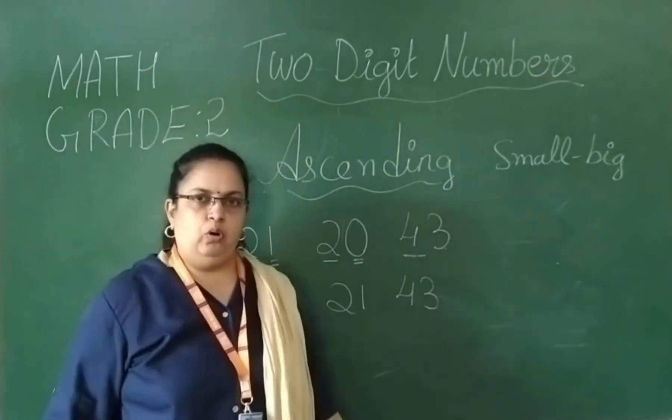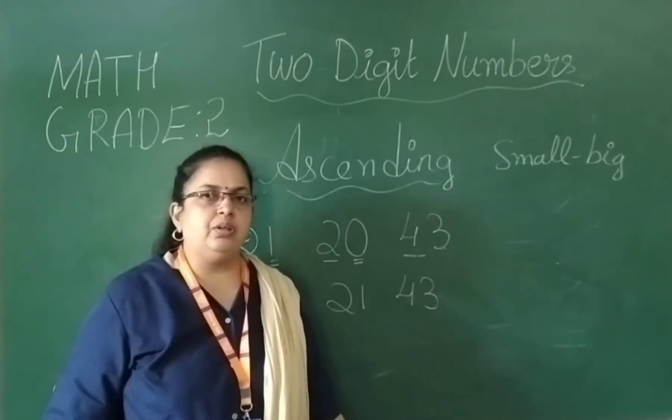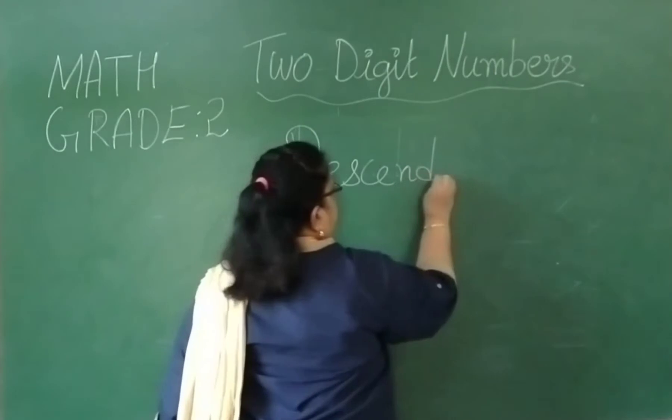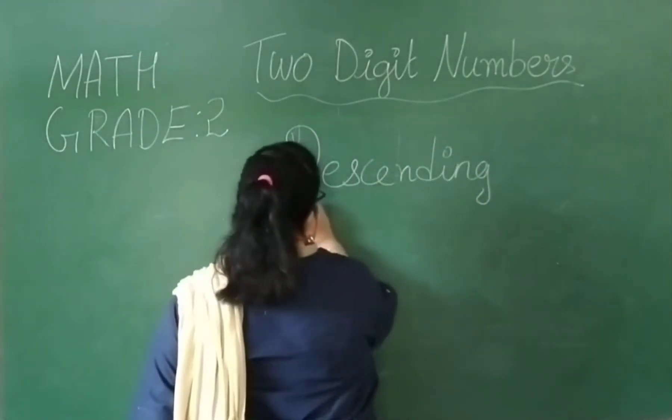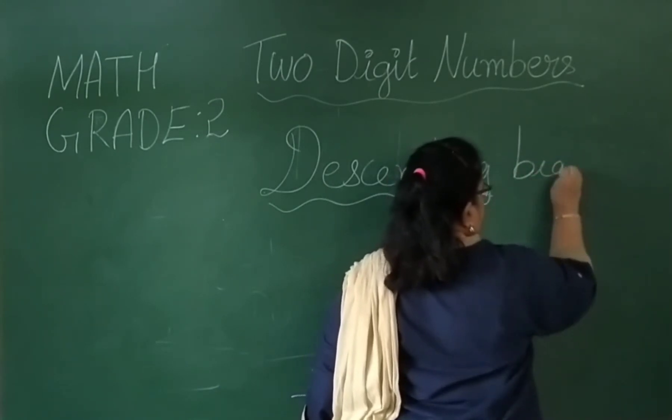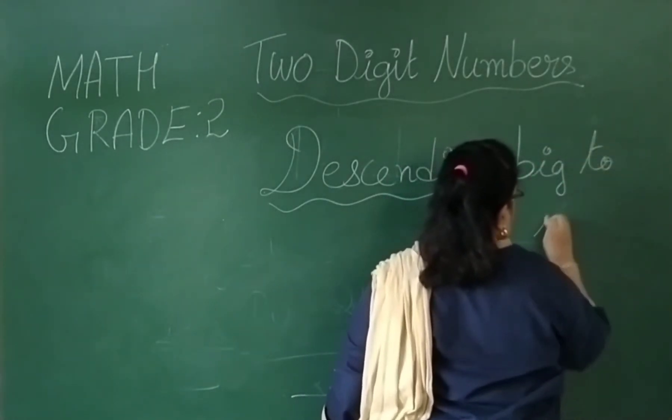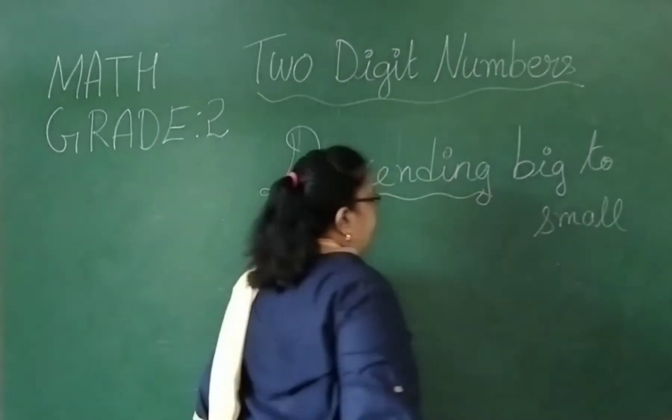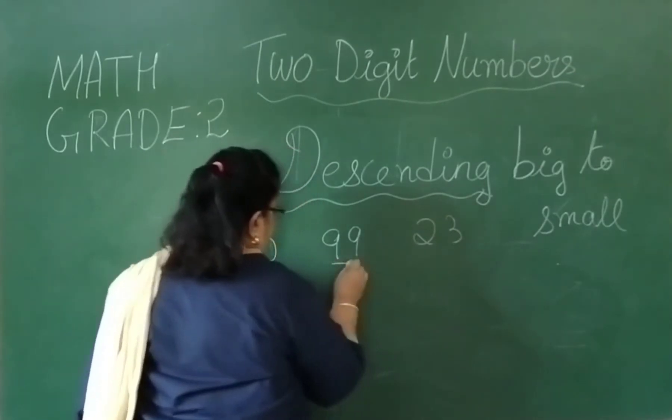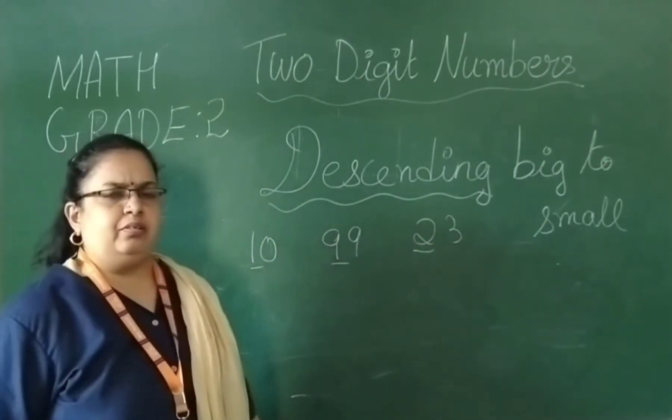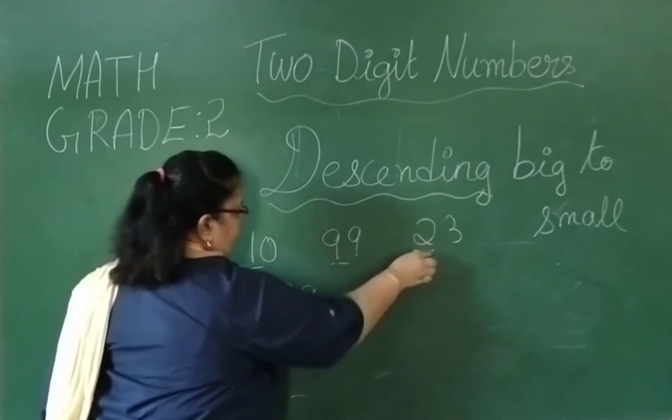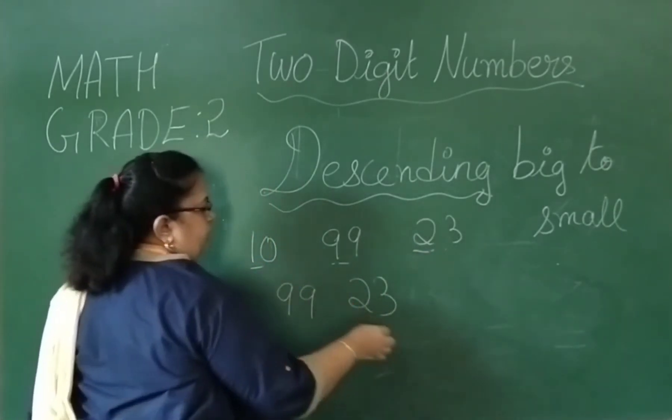Now let me make you clear about the descending order. Descending order, the descending order is from big to small. If you are getting the number like 10, 99, 23, consider the first digit. So you have to bring the number, you have to do the back count. 9 comes, then after that 23, then it comes 10.